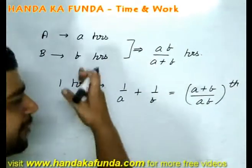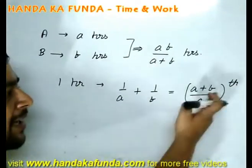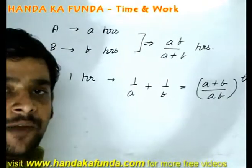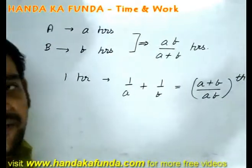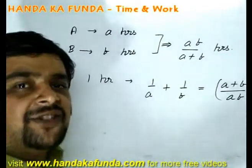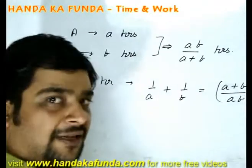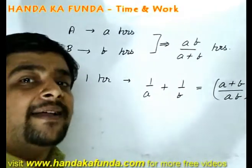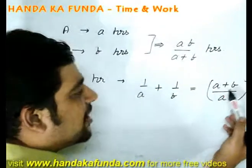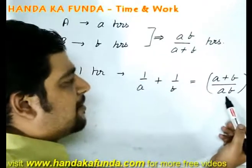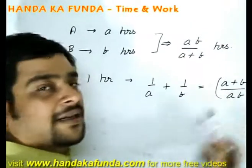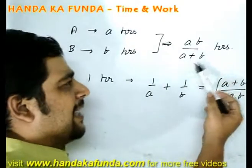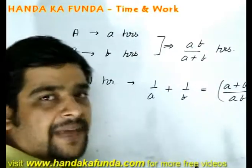So if two people are working together and they finish 1/5 of the work in 1 hour, they will take 5 hours. If they finish 3/7 of the work, they will take 7/3 hours. If they finish (A+B)/AB of the work in one hour, then they will take AB/(A+B) hours.